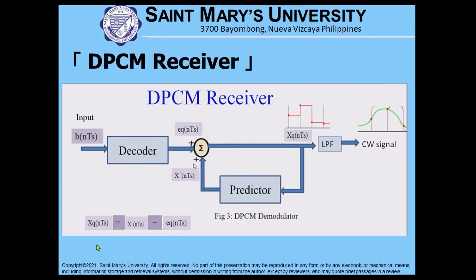So how can we solve for xq-NTS? xq-NTS is this input. The equation for that is the output of the predictor filter x-prime NTS plus the error from the decoder — the output of the decoder eq-NTS — which produces xq-NTS, the quantized value of our signal.